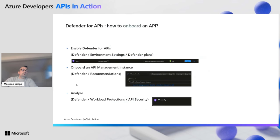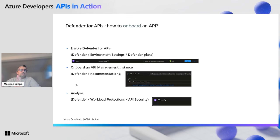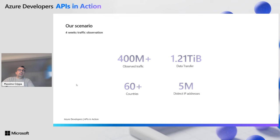But first, how to enable it? Very simple. You go on your environment and you can enable the Defender plan by just toggling it on. Then you have to search in the recommendations for your API Management instances. You can enable one or more instances, and within those instances you can decide which APIs you want to onboard — one or more — depending on where you want to focus your analysis. Then once the tool is onboarded and one or more API Management instances are onboard, you can analyze and see the results.